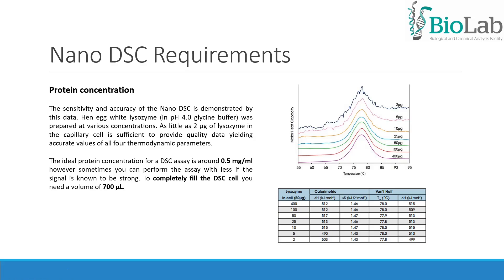Regarding NanoDSC requirements and protein concentration, the sensitivity and accuracy of the NanoDSC is demonstrated by this data. Hen and white lysozyme in pH 4 glycine buffer was prepared at various concentrations. As little as 2 micrograms of lysozyme in the capillary cell is sufficient to provide quality data yielding accurate values of all four thermodynamic parameters. The ideal protein concentration for a DSC assay is around 0.5 mg per mL. However, sometimes you can perform the assay with less if the signal is known to be strong. To completely fill the DSC cell, you need a volume of 700 µL.